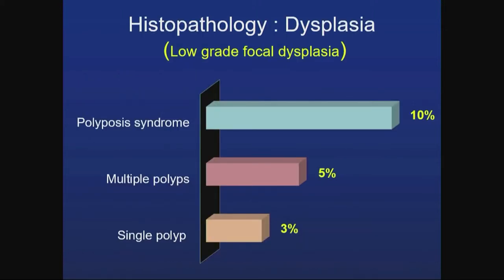Looking at dysplasia, around 10% of polyposis syndrome patients had dysplasia, and the percentage was lower in single and multiple polyps. The dysplasia was low-grade and focal in all cases, and no malignant or high-grade changes were found.